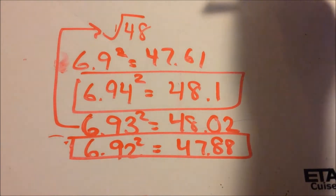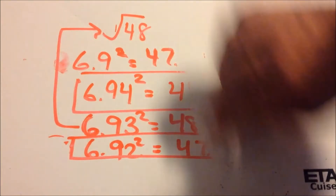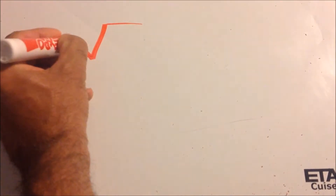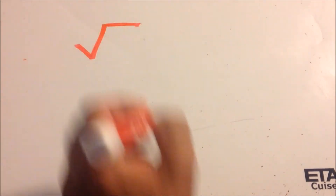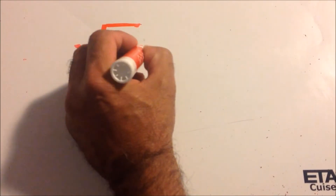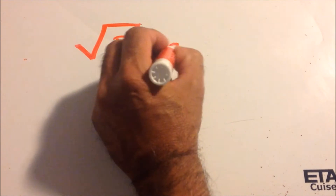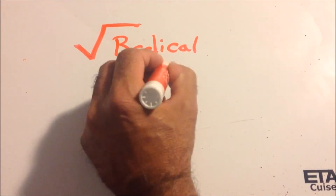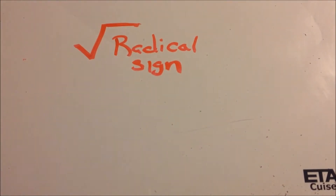We can also multiply square roots — and again, we call them radicals. So if I give you the square root sign on a test and ask what else it's called, the answer is: it's the radical sign.